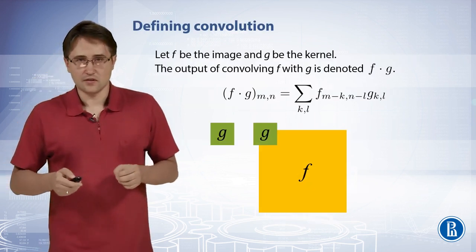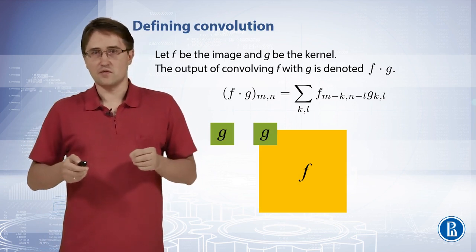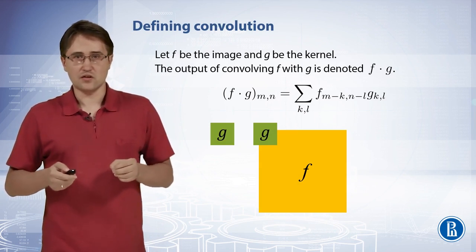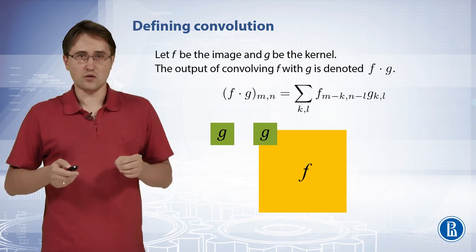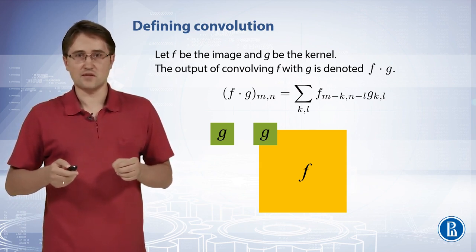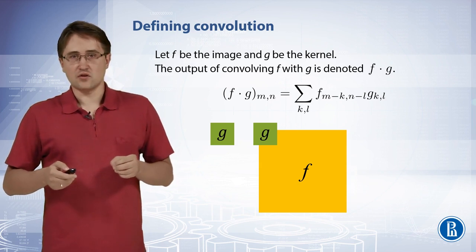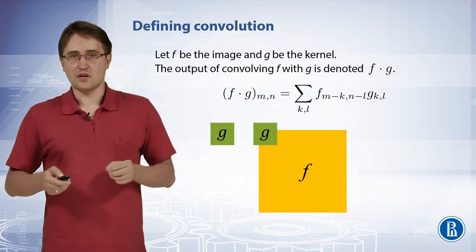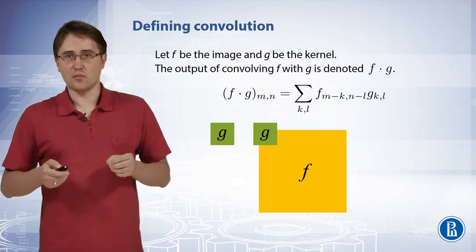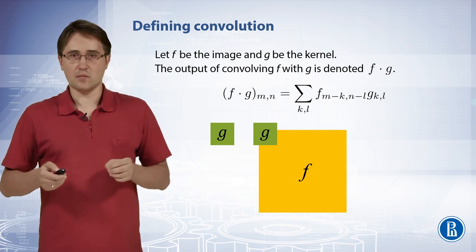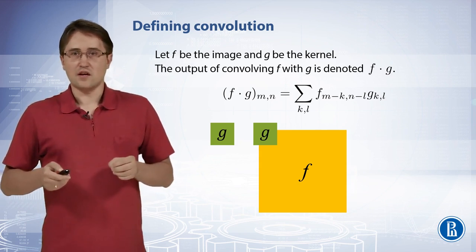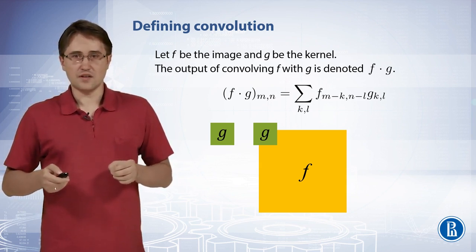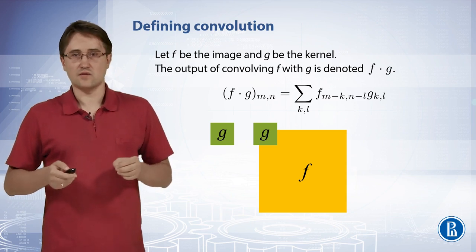The process of filtering an image with weighted averaging is called convolution. Let f be the image and j be the kernel. The output of convolution of f with j is denoted f star j. Each pixel with coordinates m, n in the result of convolution can be computed as the sum over all k and l of products of f sub (m minus k, n minus l) by j sub (k, l). We can visualize convolution as a scanning of image f with filter kernel j from top to bottom.